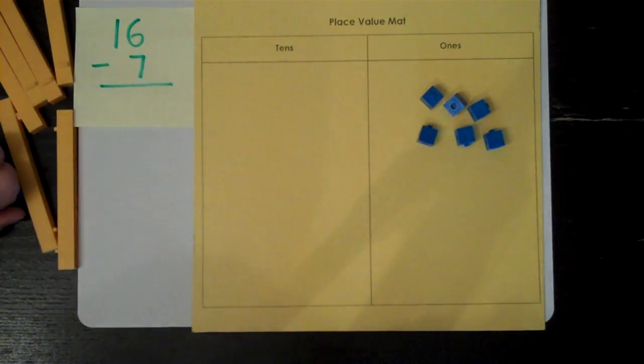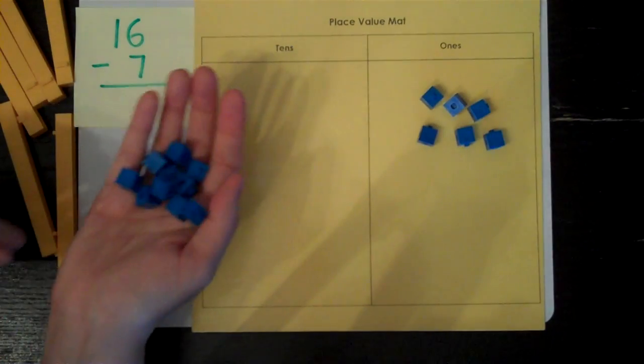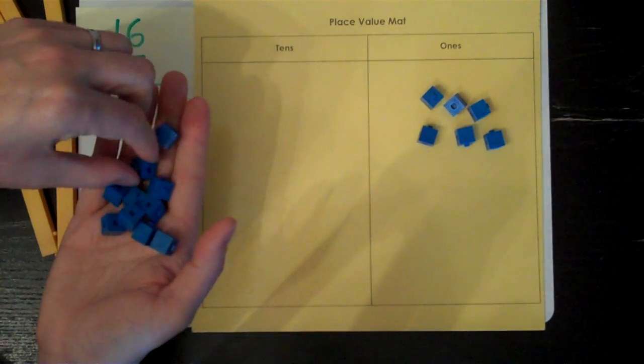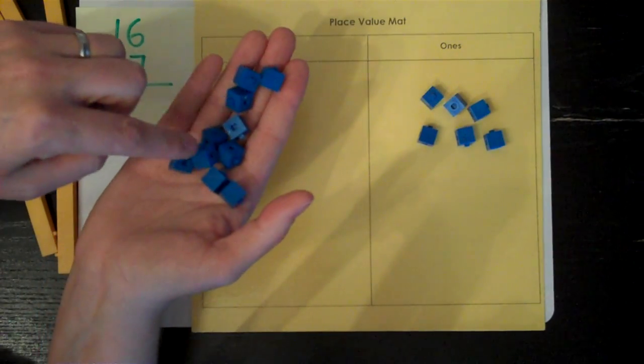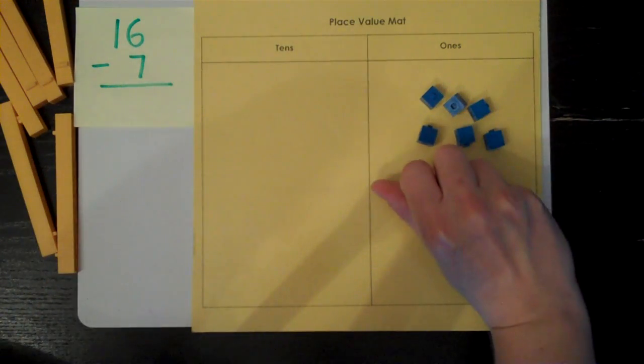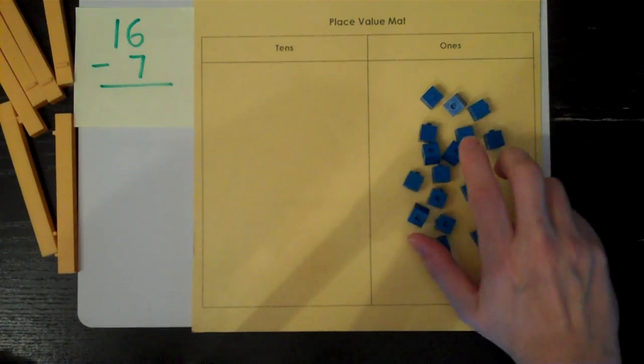I've taken my one 10 and I'm trading it for 10 ones. One, two, three, four, five, six, seven, eight, nine, ten. Because they're now ones, I'm going to put them in the ones place.